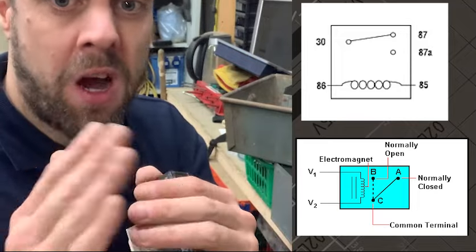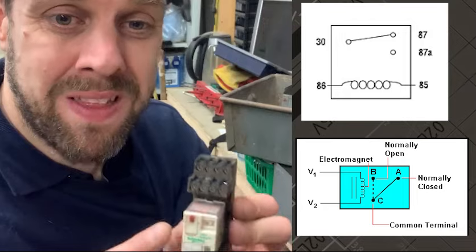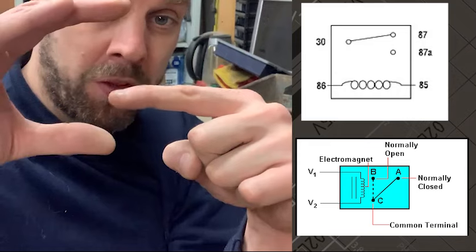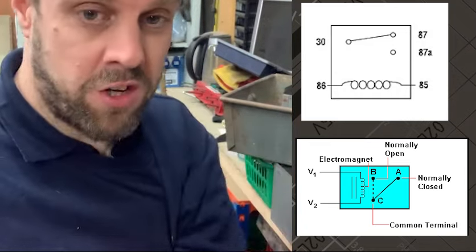There will always be a common and a normally open and a normally closed, or to be fair they could do anything, but most normal bog standard relays have common, normally open, and normally closed.